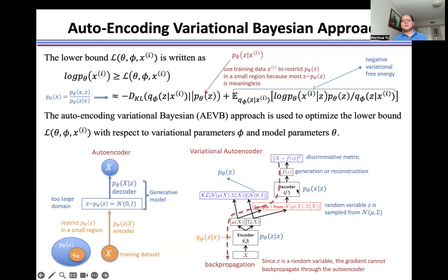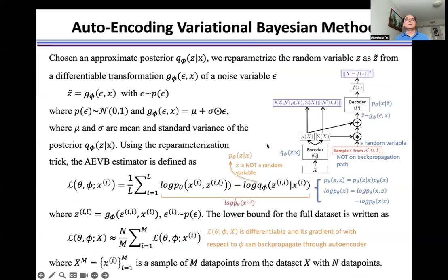We use a reparameterization trick to change the random variable to a deterministic variable. Choosing an approximate posterior,